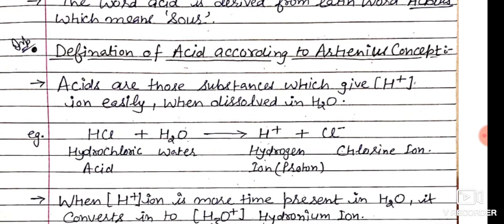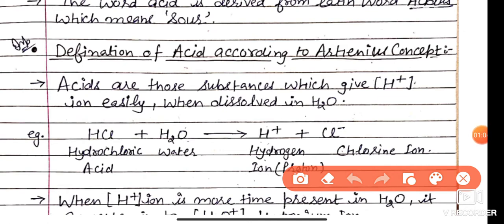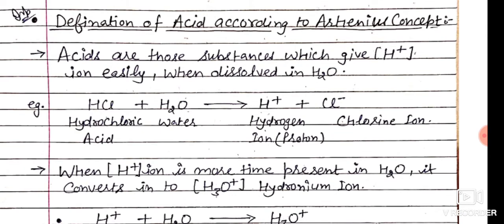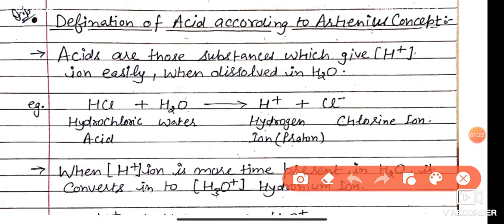Next is the Definition of Acid. It is also known as the Hydrogen-Ion Transfer Concept and basically known as the Arrhenius Concept. This concept is in our syllabus. Acids are those substances which give H-positive ion easily when they are dissolved in water. When acids are dissolved in water, they easily release H-ion and can dissociate into their respective ions.